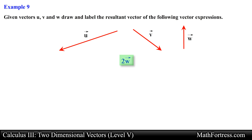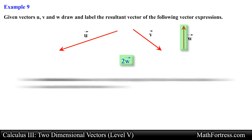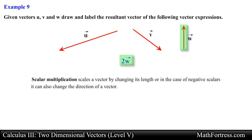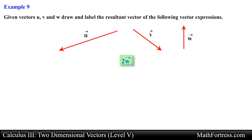Here we are asked to carry out a scalar multiplication of vector W. Recall that scalar multiplication scales a vector by changing its length, or in the case of negative scalars it can also change the direction of a vector. In this example we are asked to draw vector 2 times W. We draw this by taking vector W and doubling its size or magnitude, keeping the same direction as the original vector.